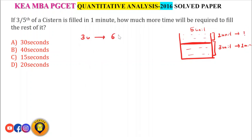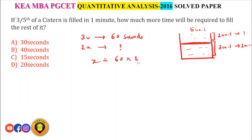1 minute means 60 seconds. If 3 units are filled in 60 seconds, then 2 units will be filled in x seconds. Cross-multiplying: x = 60 × 2 / 3 = 40 seconds. So the answer is 40 seconds.